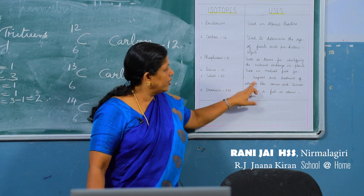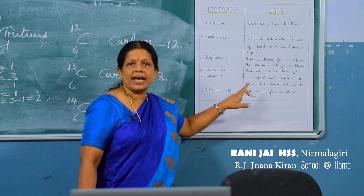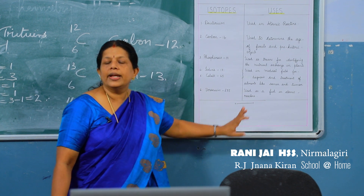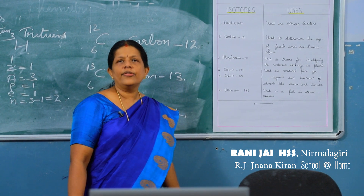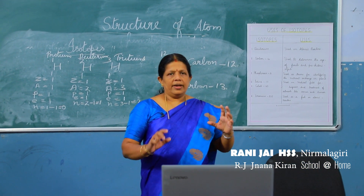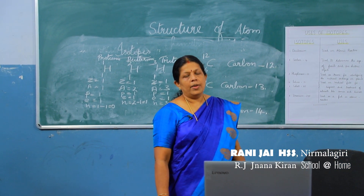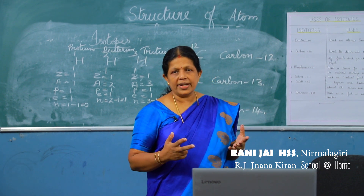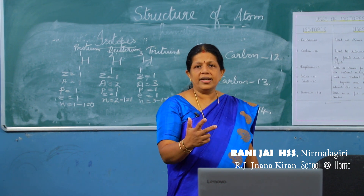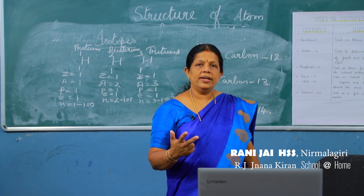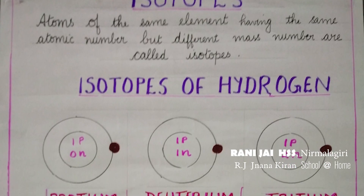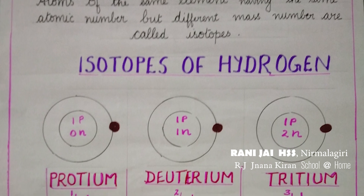Phosphorus-31 is used as a tracer for identifying nutrient exchange in plants. Iodine-131 and cobalt-60 are used in the medical field for diagnosis and treatment of ailments like cancer and tumour. Uranium-235 is used as a fuel in atomic reactors. These are the uses of isotopes. In this lesson you have understood the structure of the atom; scientists have continued to research further, and you will study those new ideas in your higher classes.